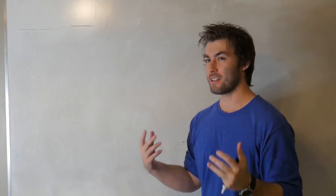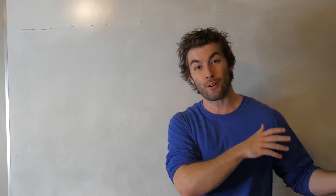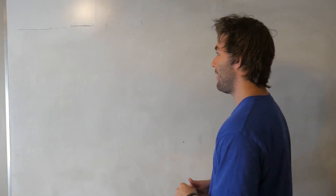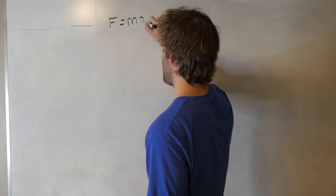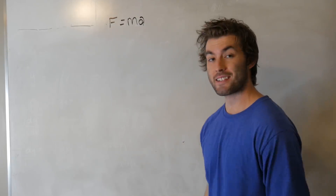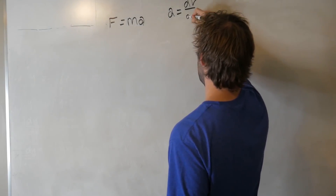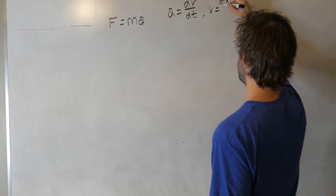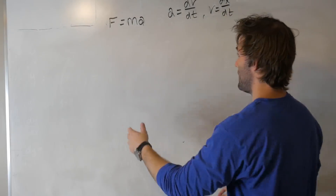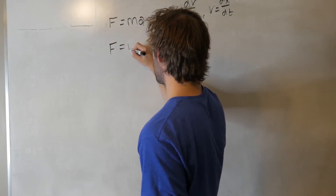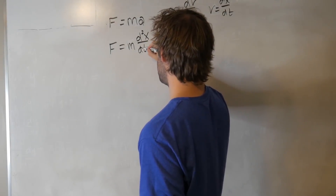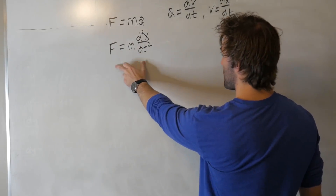Now we're ready to tackle some physics implications. We know second-order differential equations are more general than first-order ones. Let's tether this to physics. Everyone has heard of F equals ma. If you're a physics major a bit farther along, you might know how to express this as a second-order differential equation. Acceleration is the time derivative of velocity, and velocity is the time derivative of position, which tells you acceleration is the second derivative of position. So we can write F equals m times d²x/dt². That is Newton's law expressed as a second-order differential equation.